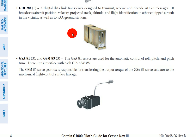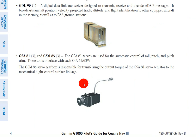Next we have the GSA 81 and GSM 85. If we have an autopilot, it needs some way to physically manipulate the controls — that's all this is, a servo motor. It gives you control in roll and pitch. Rudder control is very unlikely, and something like a Cessna 172 is most likely not going to have throttle control in the autopilot either.